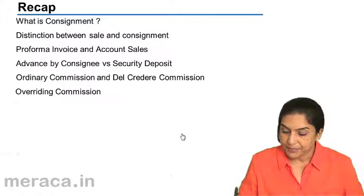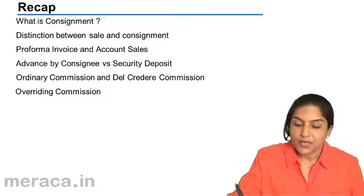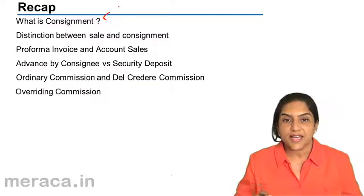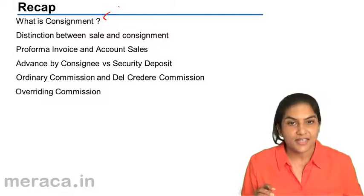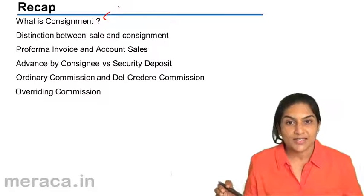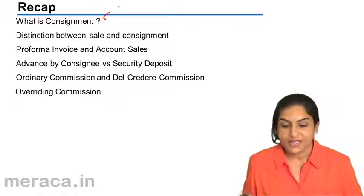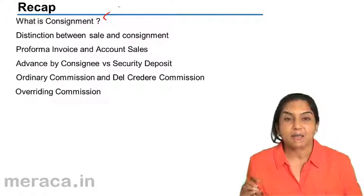A quick recap. We first understood what a consignment is. A consignment is the sending of goods by one person, called the consignor, to another person, called the consignee, so that the consignee can sell the goods on behalf of the consignor. For this, the consignee gets a commission.